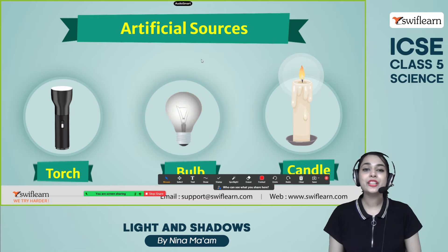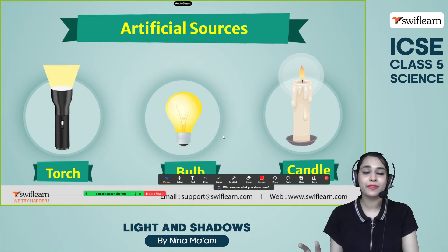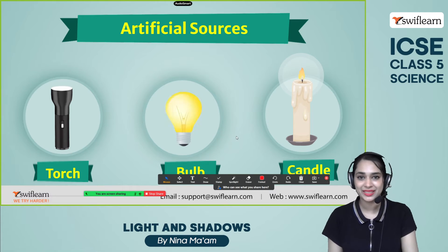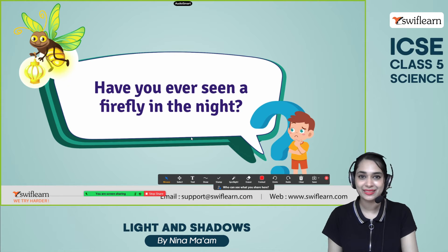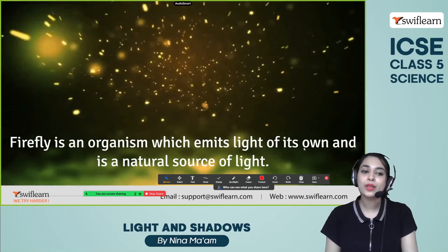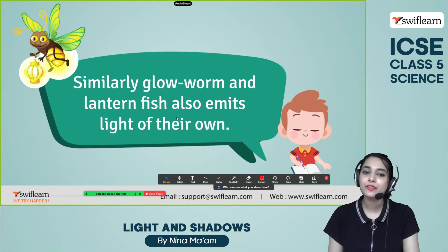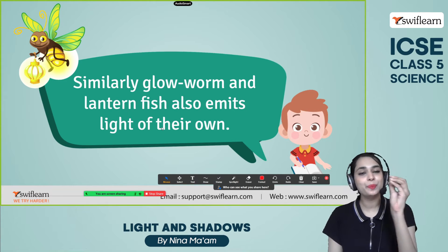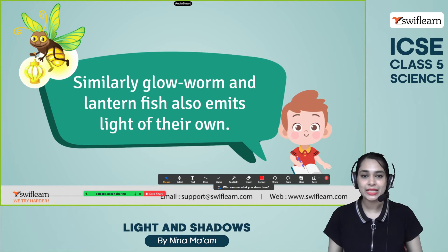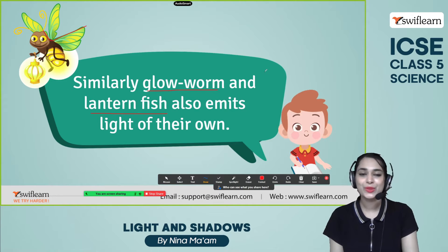Artificial sources of light include the torch, bulb, candle, and other electronic sources — all are artificial because they are man-made. Have you ever seen a firefly at night? The firefly is an organism which emits light of its own and is a natural source of light. Similarly, glowworm and lanternfish also emit light of their own. Please note down these three natural sources: firefly, glowworm, and lanternfish.